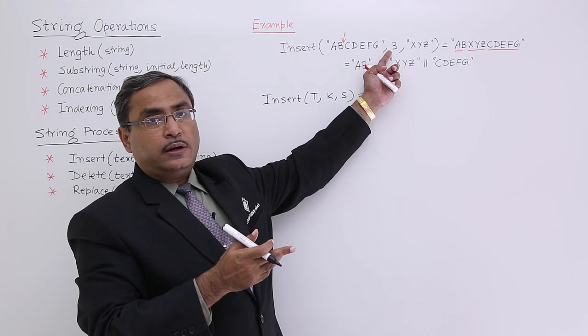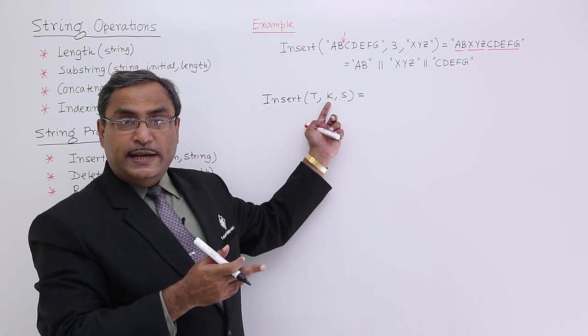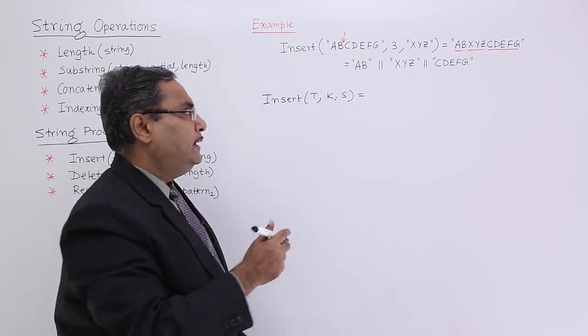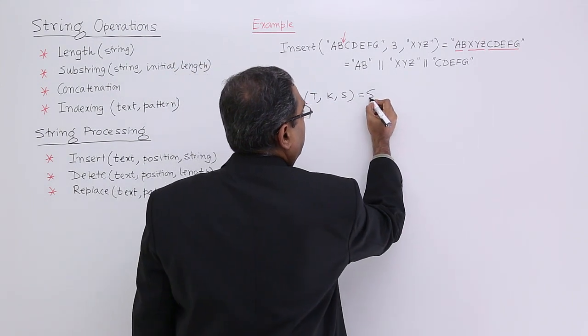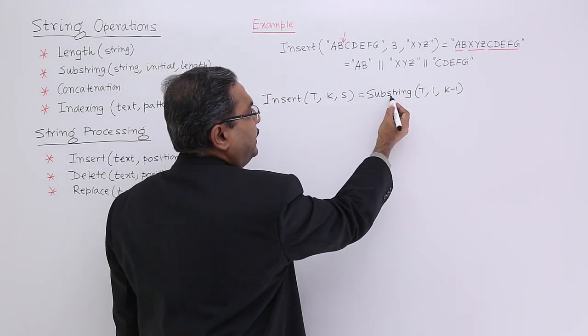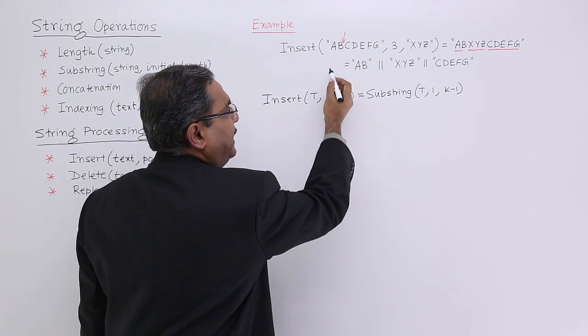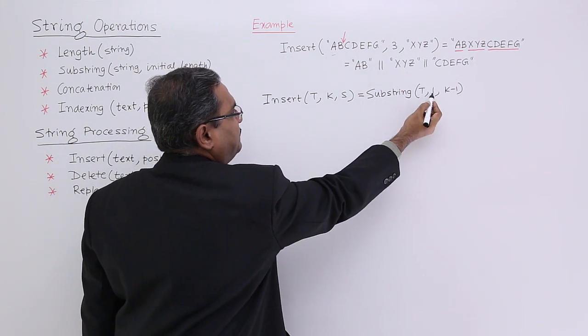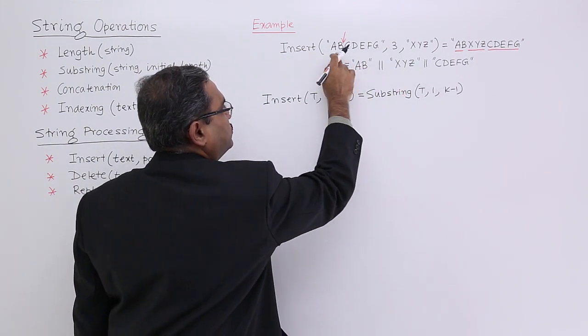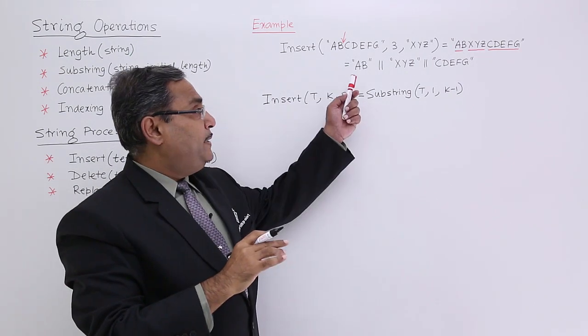2 means 3 minus 1, so 2 means K minus 1. Substring(T, 1, K-1) means from the main text, from the very first place, I am picking up K minus 1 number of characters. That is my AB.